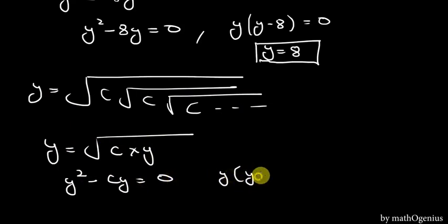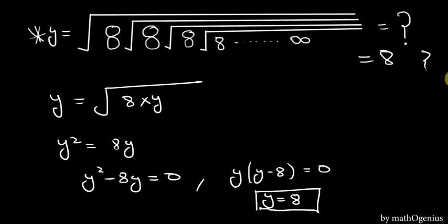And y times y minus c is equal to 0, and y is not equal to 0, so y is equal to c. The 8 thing I added just to make this question look interesting, because when we flip this 8, it becomes infinity.